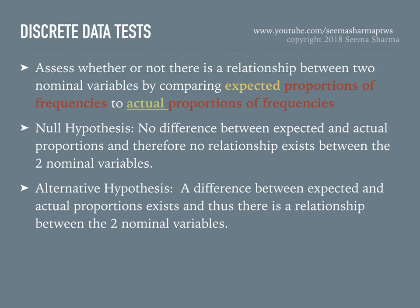Discrete data tests assess whether or not there is a relationship between two nominal variables by comparing expected proportions of frequencies to actual proportions of frequencies. The null hypothesis states there is no difference between expected and actual proportions, and therefore no relationship exists between the two nominal variables. The alternative hypothesis states that a difference between expected and actual proportions exists, and thus a relationship between the two nominal variables is present.